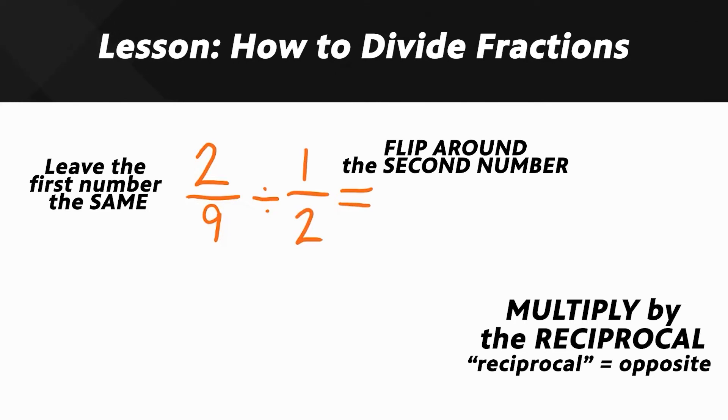we'd turn 2 ninths divided by 1 half into 2 ninths times 2 over 1. Then you simply turn it into a multiplying fractions problem and you solve it by multiplying straight across. 2 times 2 is 4 and 9 times 1 is 9.